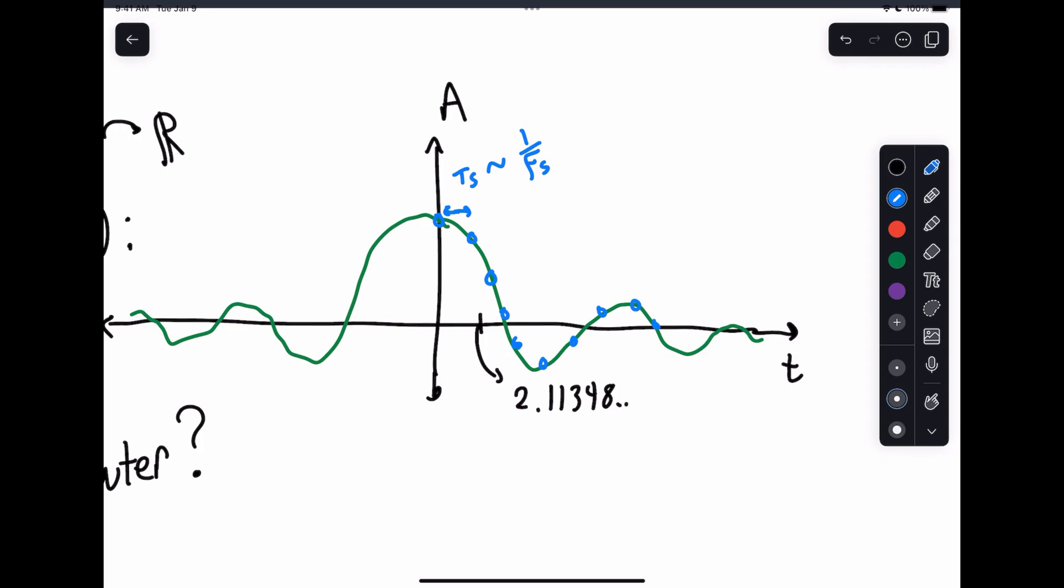This is where you get things like 44.1 kilohertz or 48 kilohertz in CD players. That has to do with sampling rate, which is related to the sampling frequency. So that is fantastic, and we'll talk more about that later.